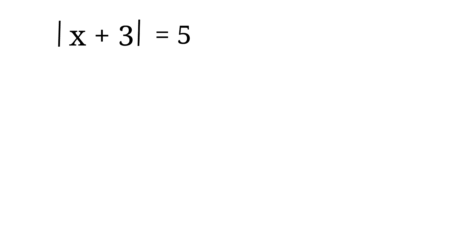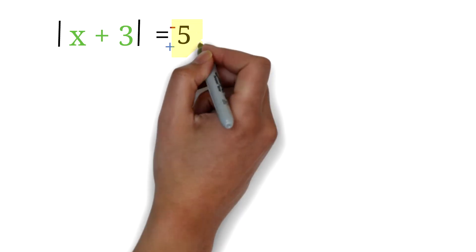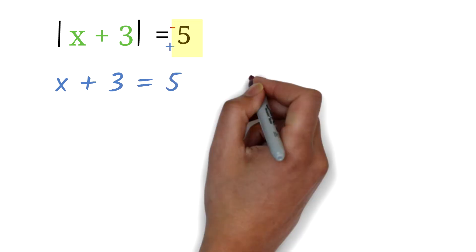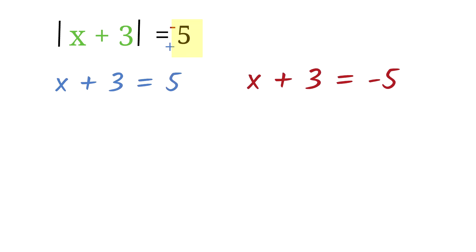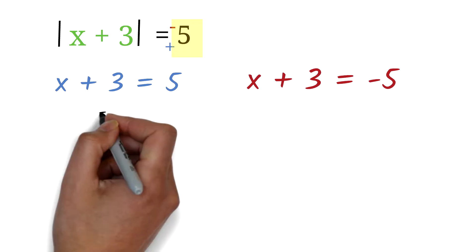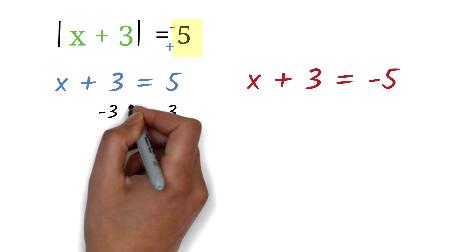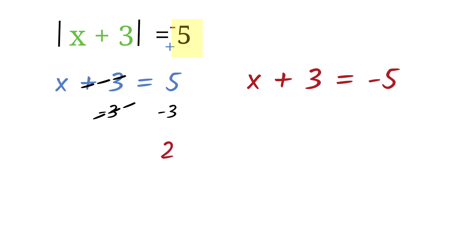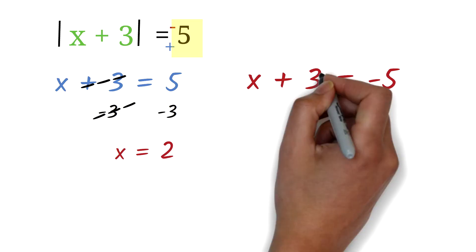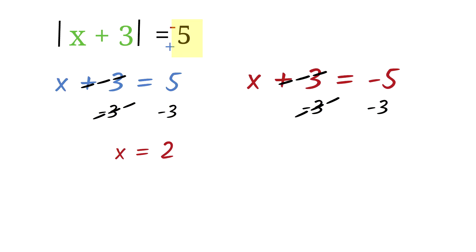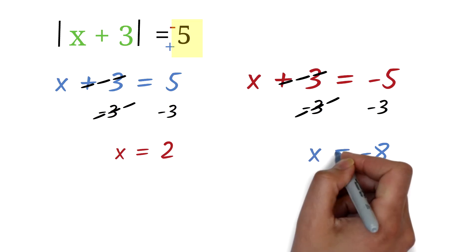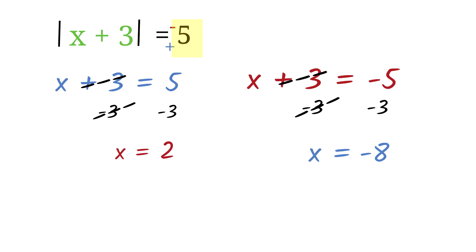The absolute value of x plus 3 is 5. Find x. We set x plus 3 equal to positive 5 or x plus 3 equal to negative 5. For the first equation, subtract 3 from both sides: 5 minus 3 is 2, so x equals 2. For the second equation, subtract 3 from both sides: negative 5 minus 3 is negative 8, so x equals negative 8. Therefore x equals 2 or x equals negative 8.